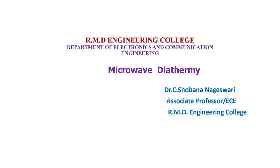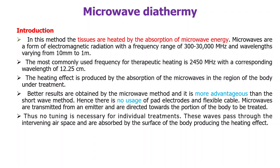Good morning. In this video we are going to discuss about microwave diathermy. In the earlier session we have discussed about shortwave diathermy. The second type of diathermy is microwave. The microwave energy is absorbed by the human body and that produces the heat. The range of microwaves we are using is usually 300 to 300,000 MHz and the wavelength ranges from 1 mm to 10 mm. The most usable range for therapeutic heating is 2450 MHz and the wavelength is 12.25 cm.